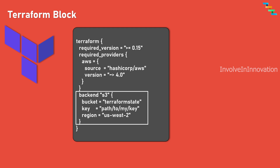There is also a backend block. The backend block allows you to configure the backend where Terraform stores its state. The backend is responsible for managing the state file. The state information is stored in terraform.tfstate, which tracks the current state of your infrastructure. Examples of backends include AWS S3, Azure Storage, or the local file system. The specific configuration options depend on the type of backend you choose.